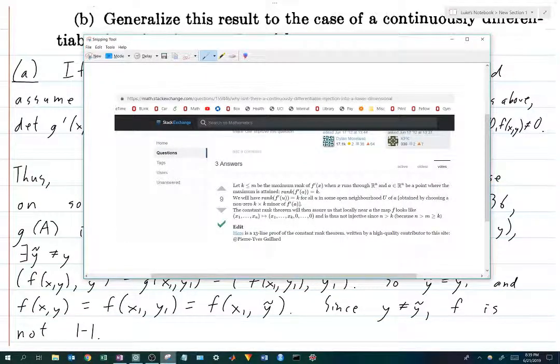I found this thread on Math Stack Exchange which is talking about this problem, and specifically part B, and it looks like there's not too difficult of a solution which is using something called the constant rank theorem, and apparently this is a generalization of the inverse function theorem, and it sounds like even if applying this more general theorem isn't necessary, what part B boils down to is proving a special case of this constant rank theorem.